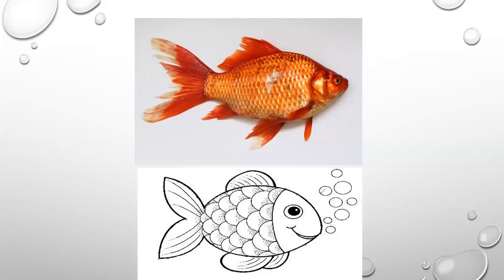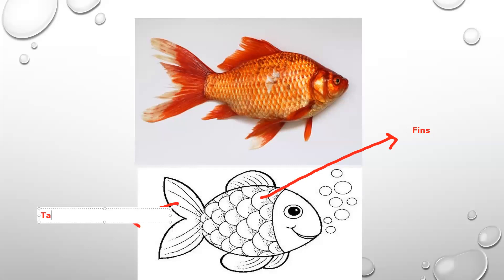Now let's move to the next animal. You can see from the picture that it's a fish. These are all the fins of a fish, and this is the tail of a fish. Can you tell me what are the functions of the fins and the tail? A fish swims with the help of its fins and tail. The fins and tail help a fish to swim.